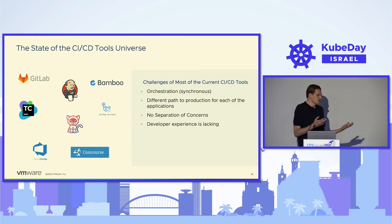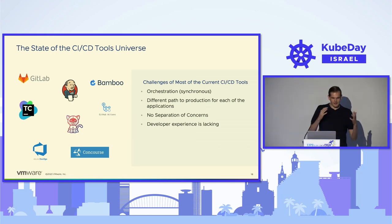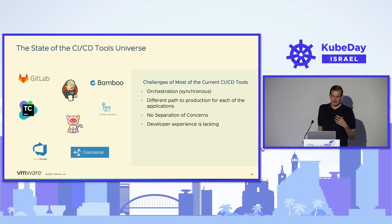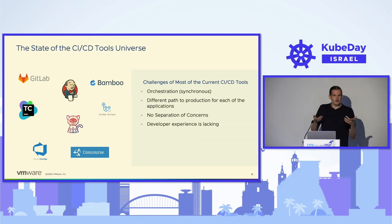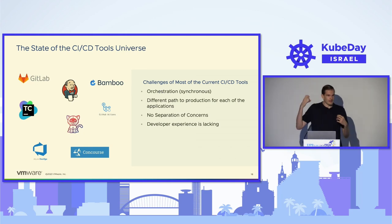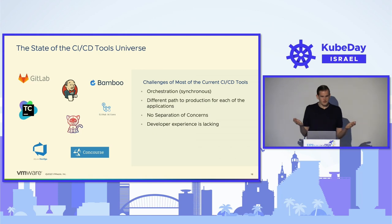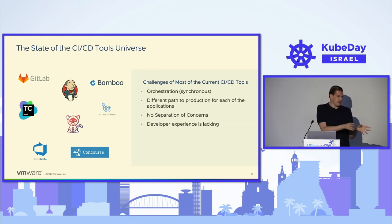The next topic is CI/CD — you need a way to go from source code to container image to deployment. All common CI/CD tools share the same challenges. They are synchronous with an orchestrator, so if the orchestrator has a problem, nothing in the path to production works. Additionally, each application usually has a different pipeline, even if you use templates. If you update a template — for example, adding a CVE scanner — there's no mechanism to automatically update all CI/CD instances. There's usually no separation of concerns, and the developer experience is lacking.